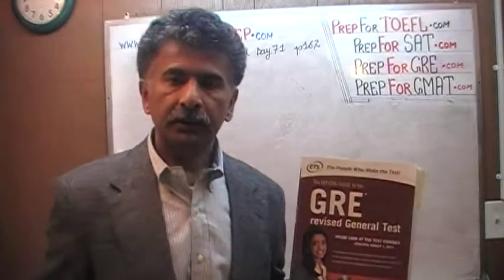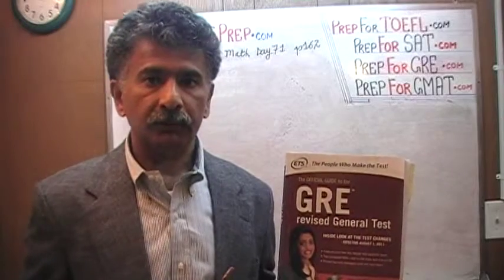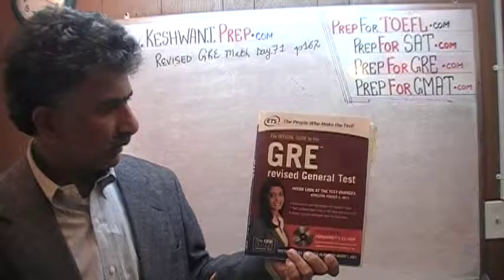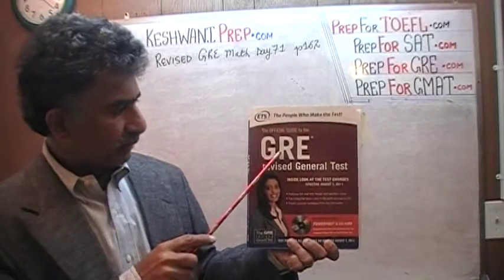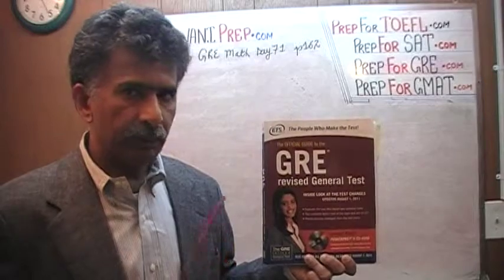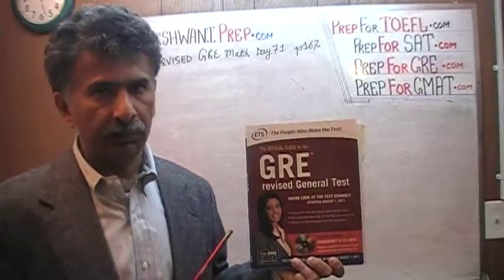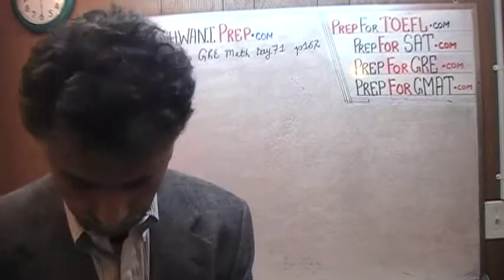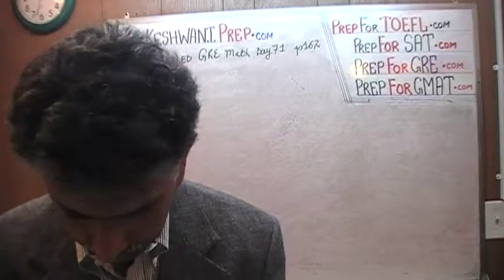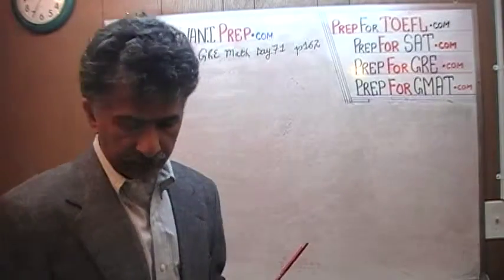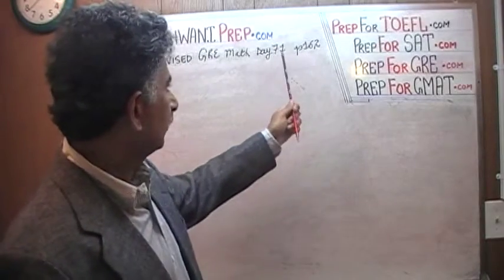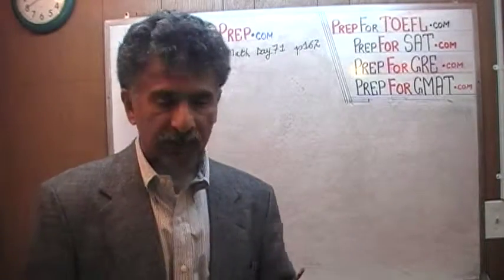We are here because we want to prepare for the math portion of the GRE. We have been solving math problems out of this book, the official guide to GRE, the revised general test. If you do not own this book already, purchase it immediately — you're going to need it in order to follow my work. The problem we are about to solve is on page 162, and today is our lesson number 71, the bottom problem.